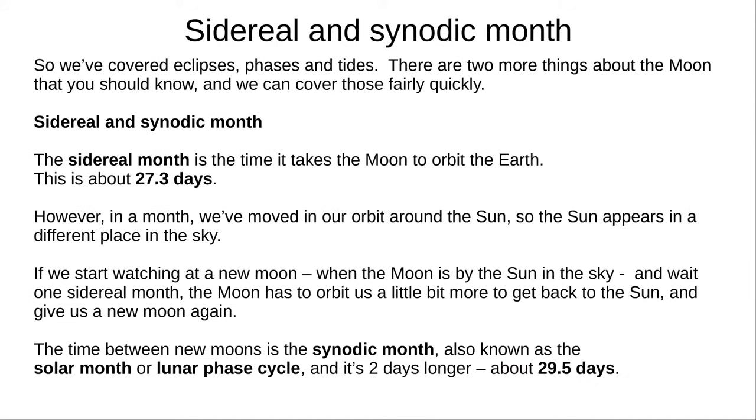That's our three main topics covered: eclipses, phases, and tides. I've just got two more things to tell you about the Moon, and we'll cover those pretty quickly. The first is the length of a month, and we have two different months to consider. Neither of them is the same length as a calendar month.